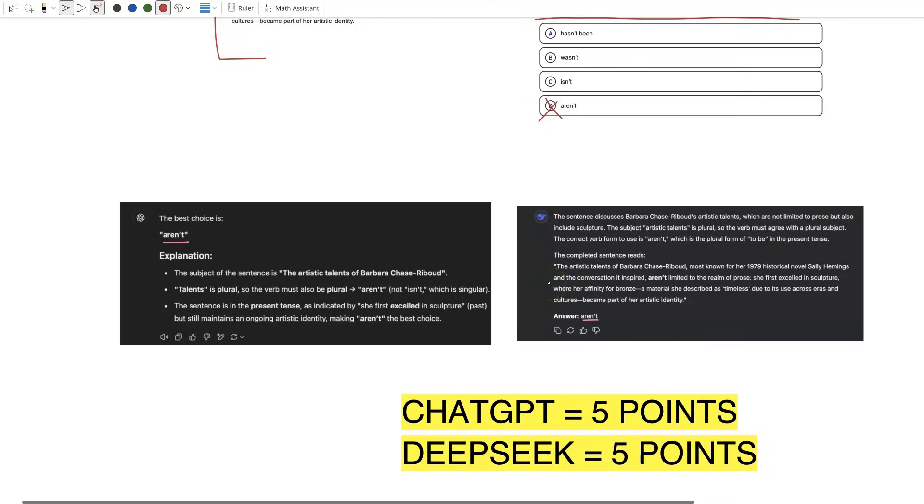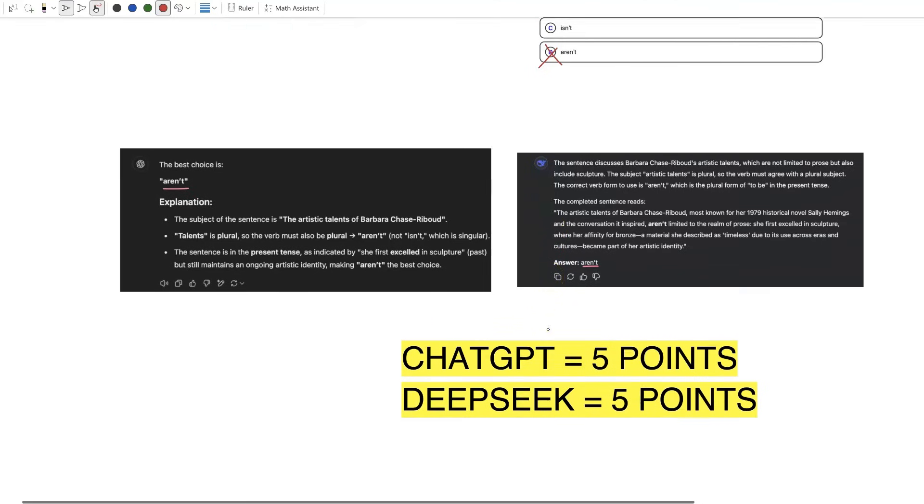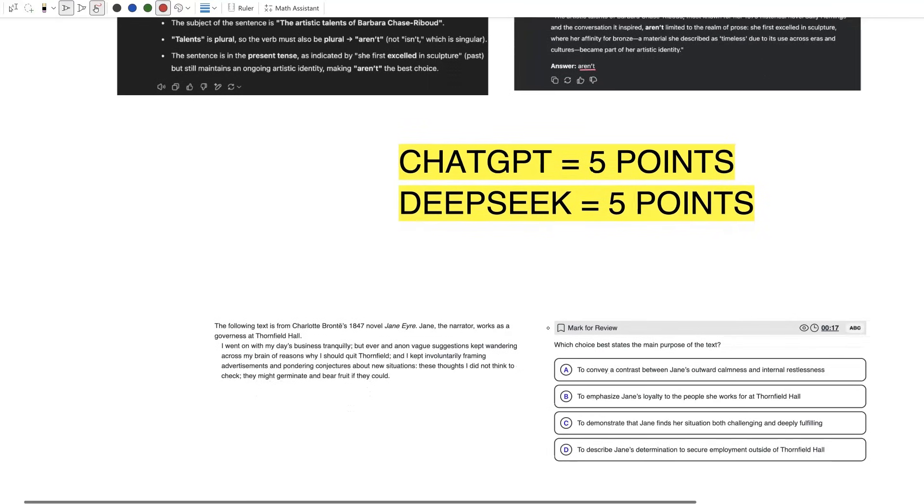So we're down to the final SAT English question to see which AI model is superior at answering SAT questions. We have 'which choice best states the main purpose of the text?' This is an excerpt from a novel. I'm testing these different skills for these AI models. Pause the video and try to solve the question yourself.